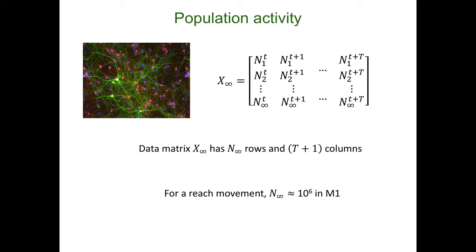In the particular case of motor cortex, if you're doing reaches with your arms, there are about a million neurons — 10 to the 6 — in primary motor cortex that need to be activated for you to execute that reach movement. I'm going to refer to this scenario where we can record all the neurons of interest in a given area as recording an 'infinite' number of neurons. Of course it's not infinite, but it's very large — like 10 to the 6 in primary motor cortex for a typical reach.